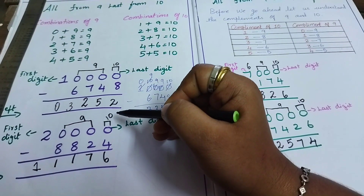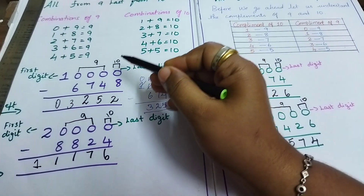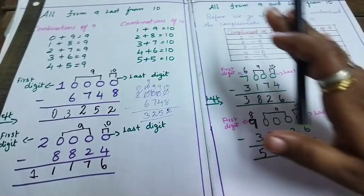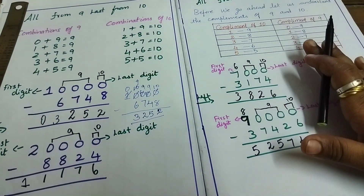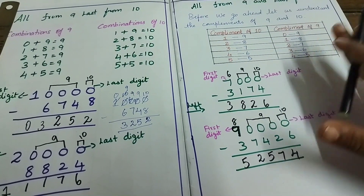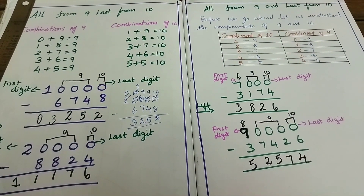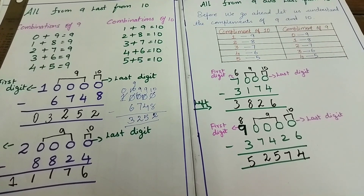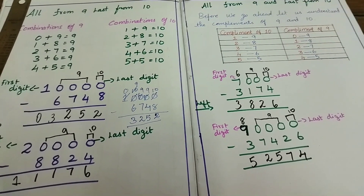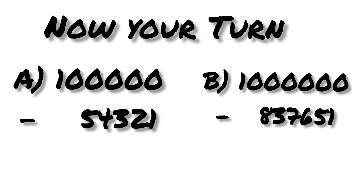Here I have added with 8 - what number should be added to get 10? Remember this. The compliment, if you learn it, will be really helpful when you are solving these sums. I will be giving you 2 sums for you to solve. Sum A: 1 lakh minus 54,321. Sum B: 10 lakh minus 8,37,651. I hope you all have understood the concept. Thank you. Thanks for watching.